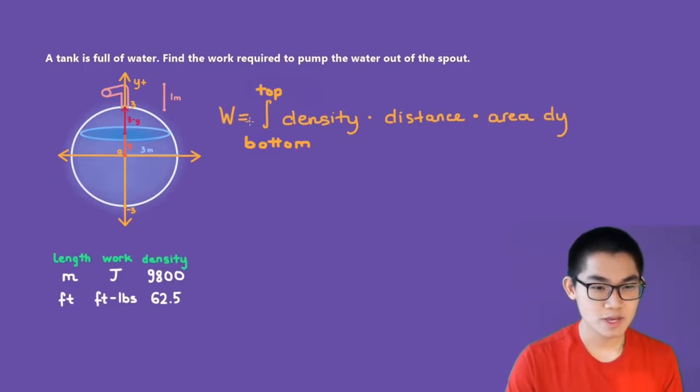So work will be equal to the integral from the bottom to the top of density times distance times area. As mentioned before, we want to empty the tank from here to here. So the top will be three and the bottom will be minus three.